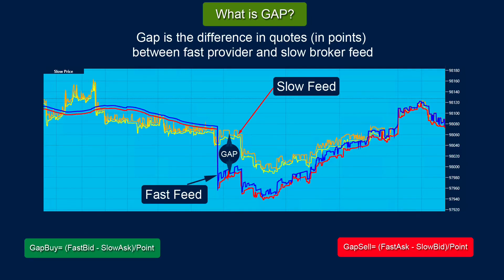What is Gap? Gap is the difference in quotes in points between the fast provider and the slow broker feed. In the picture you can see the bid/ask quotes charts of a fast provider and a slow broker. Here you can clearly see the signal to sell and the resulting gap in the gap quotes.